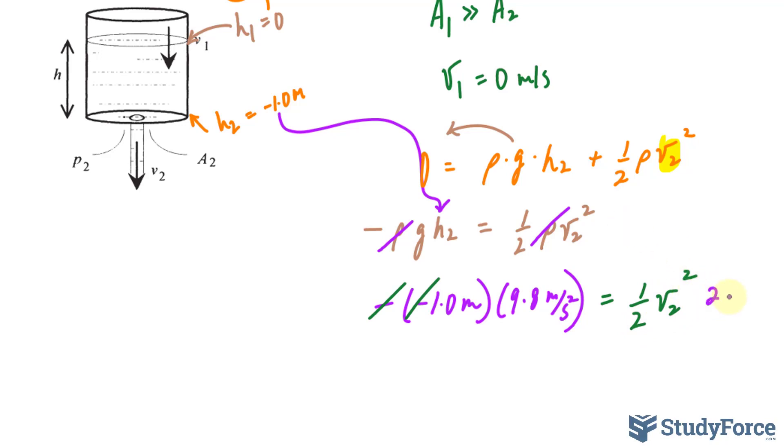Multiplying both sides by 2 gets rid of this fraction. So we have 2 times 1 times 9.8 meters per second squared. That reduces down to 2 times 9.8 meters per second squared. And on the right side, we can finally isolate for V by square rooting both sides.